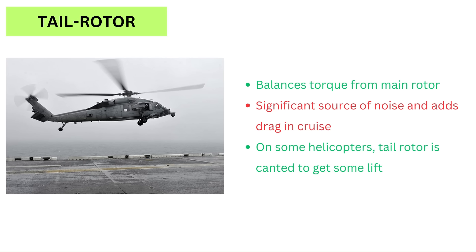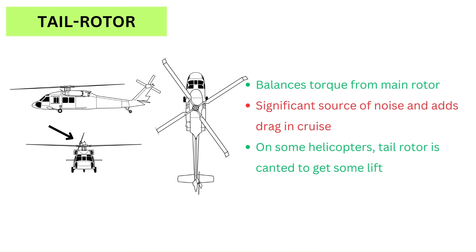The tail rotor is a significant source of noise and adds drag in forward flight. One clever way of using the tail rotor is installing it at an angle so as to get some lift. The canted tail rotor can be seen on the Sikorsky H-60 Blackhawk.